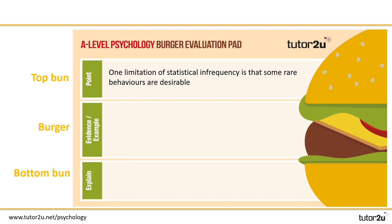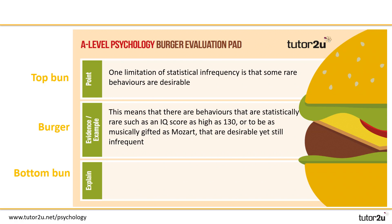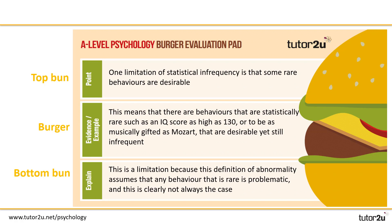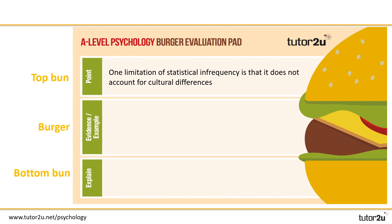The first point was that one limitation of statistical infrequency is that some rare behaviors are desirable. Hopefully you were able to add some elaboration yourself — there's a suggested elaboration on the screen. Finally, hopefully you added a reason for why this is a limitation, and you can see from the example on the screen this doesn't have to be very long at all, just enough to conclude the point and put it into evaluation context.